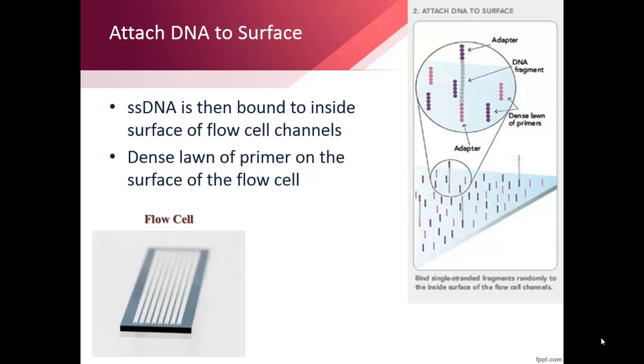This means if one of the DNA fragments has a P5 adapter ligated to it, it will anneal to the flow cell on a P7 oligo, which is attached to the flow cell, and vice versa.